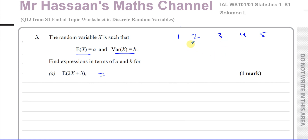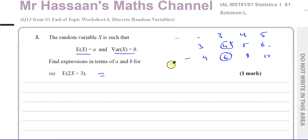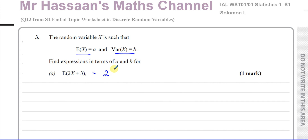If I add 1 to each of those numbers, I get 2, 3, 4, 5, 6, and the mean becomes 4. So adding 1 to each number makes the mean increase by 1. And if I multiply each number by 2, I get 2, 4, 6, 8, 10, and the mean goes from 3 to 6. So the mean is affected by multiplication and division. Therefore the expected value of 2x+3 is 2 times E(x) plus 3, giving 2a+3. That's the answer to part a.